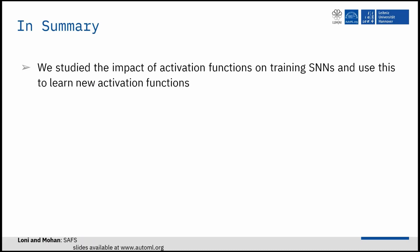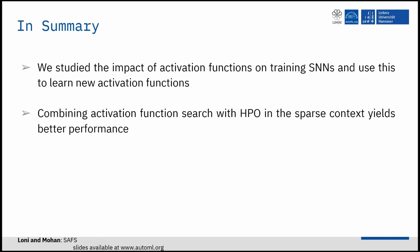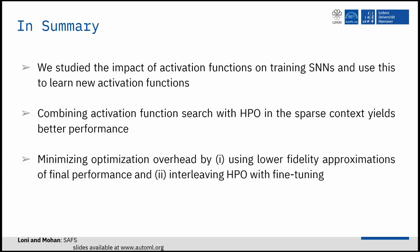In summary, we studied the impact of activation functions on training sparse neural networks and used these to learn new activation functions. We showed that combining activation functions search with hyperparameter optimization in the sparse context yields better performance.